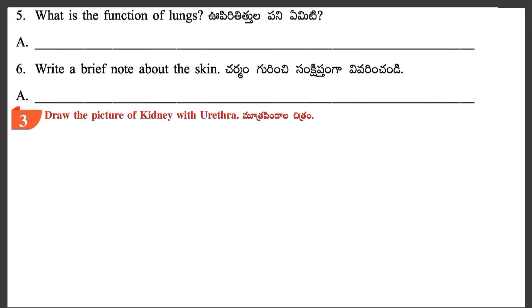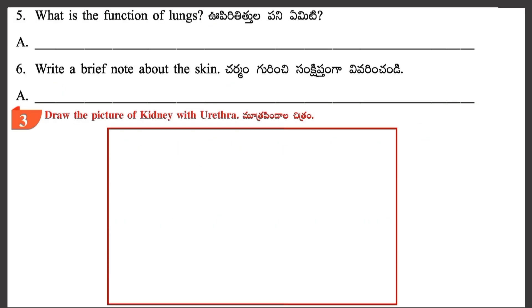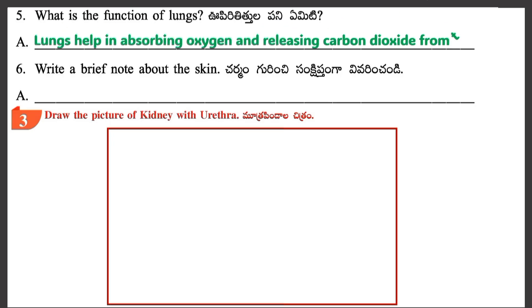Question 5: What is the Function of Lungs? Answer: Lungs help in absorbing oxygen and releasing carbon dioxide from the blood.